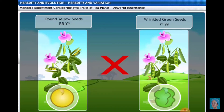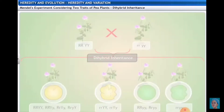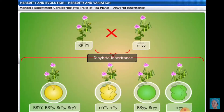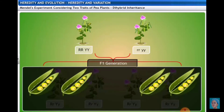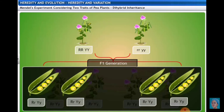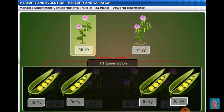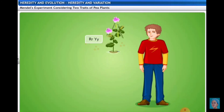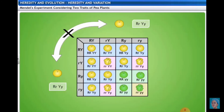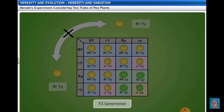The other parent has wrinkled and green seeds, which are the recessive characters, represented by lowercase letters (rr yy). In the F1 generation, each parent contributes one allele — parent one gives R and Y, parent two gives r and y. All F1 offspring will have the genotype RrYy, and the phenotype will be round yellow.